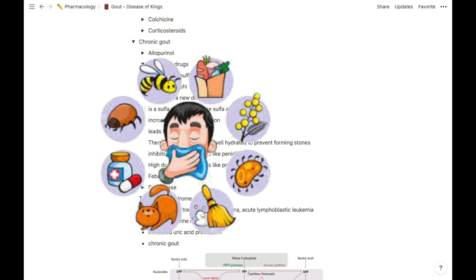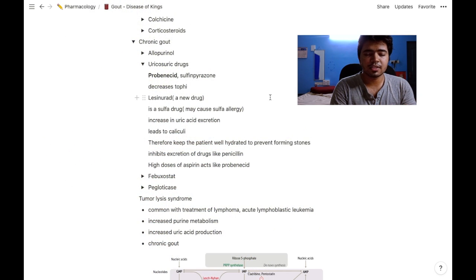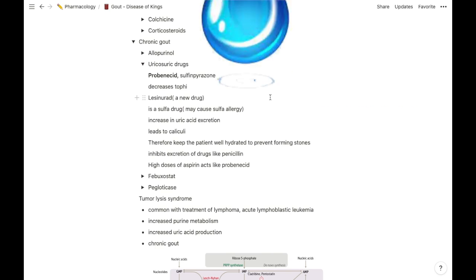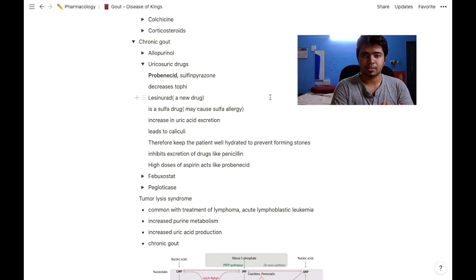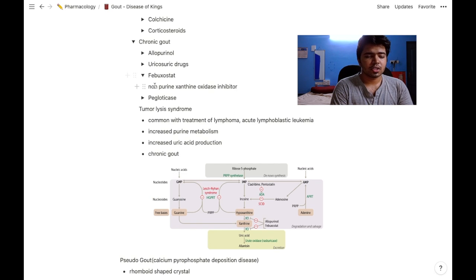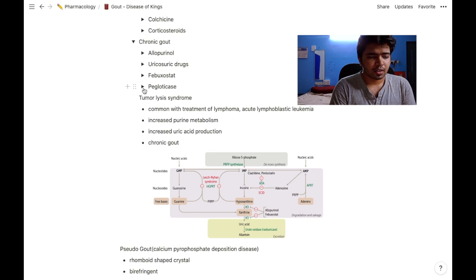Probenecid is a sulfa drug, so we should be cautious about sulfa allergies. This drug increases uric acid excretion, so these excreted uric acids may get deposited and cause calculi. Therefore, keeping the patient well hydrated is important. Probenecid inhibits excretion of drugs like penicillin. High doses of aspirin act like probenecid.